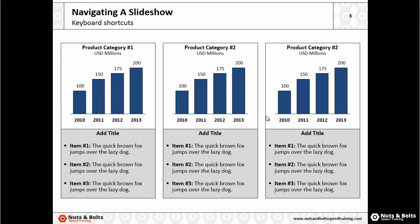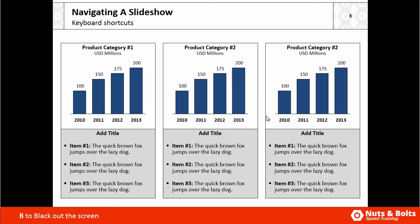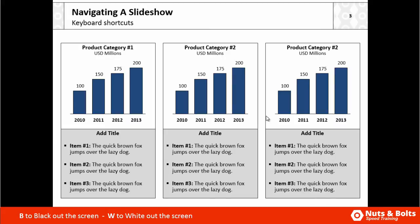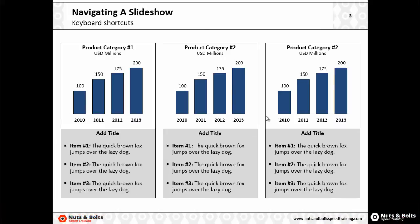A couple of other keyboard shortcuts in presentation mode: you have B for black, which will black out your screen, and W which will white out your screen. Hit W again and the screen returns.